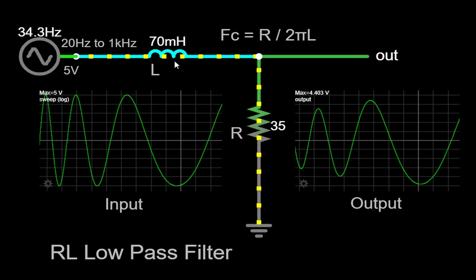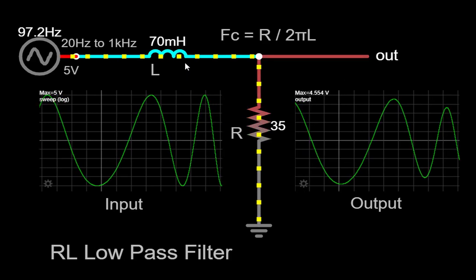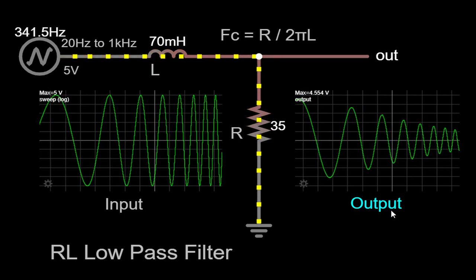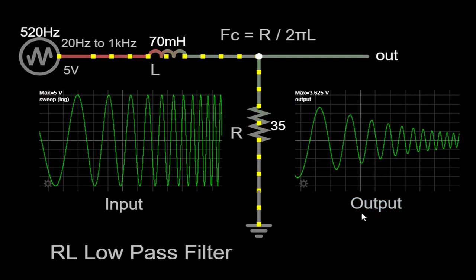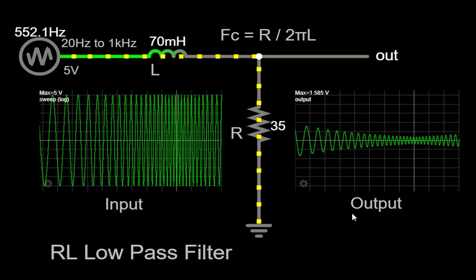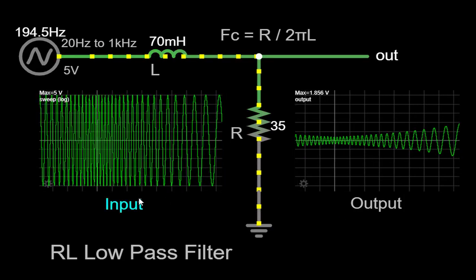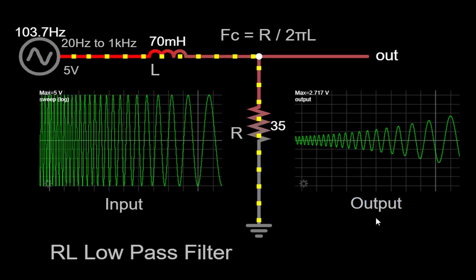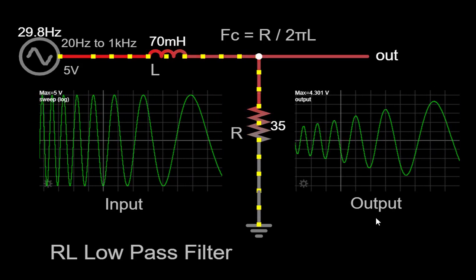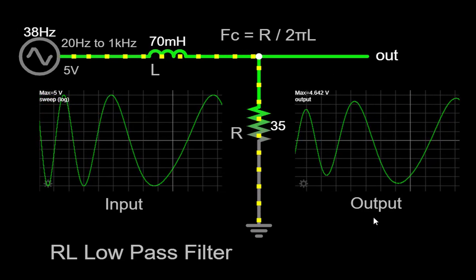As the frequency continues to increase beyond the cutoff frequency, the attenuation becomes more prominent. The output waveform exhibits a significant reduction in the amplitude of higher frequency components, while the lower frequency components still pass through relatively unaffected. This behavior demonstrates the filter's ability to effectively suppress and filter out higher frequency signals. By observing the input and output waveforms on the scope throughout the frequency sweep, we gain insights into the RL low-pass filter's characteristics.